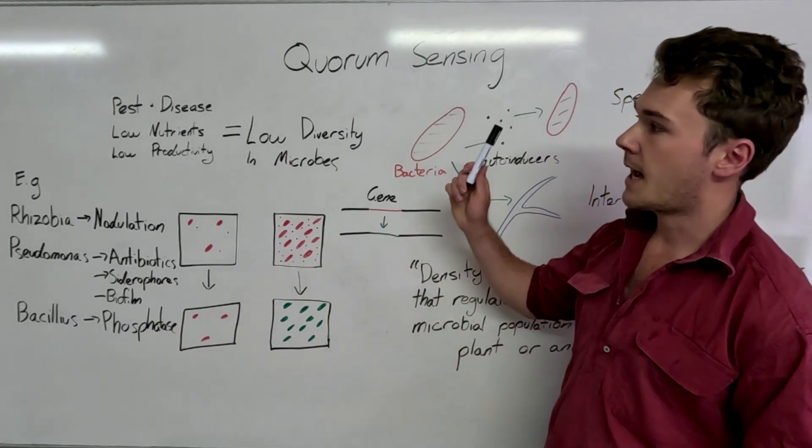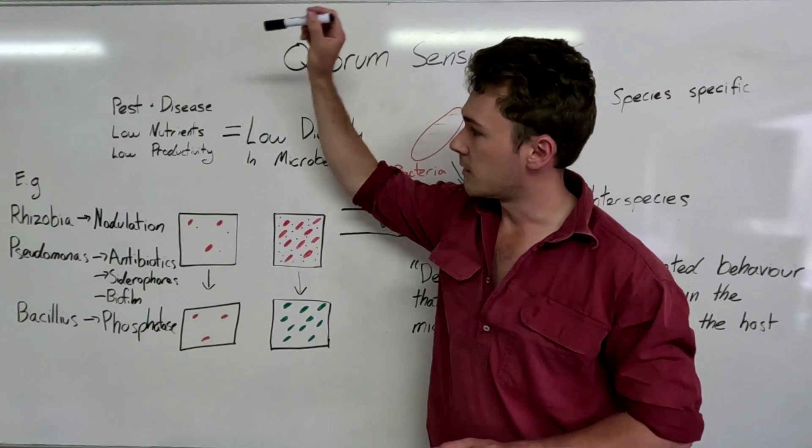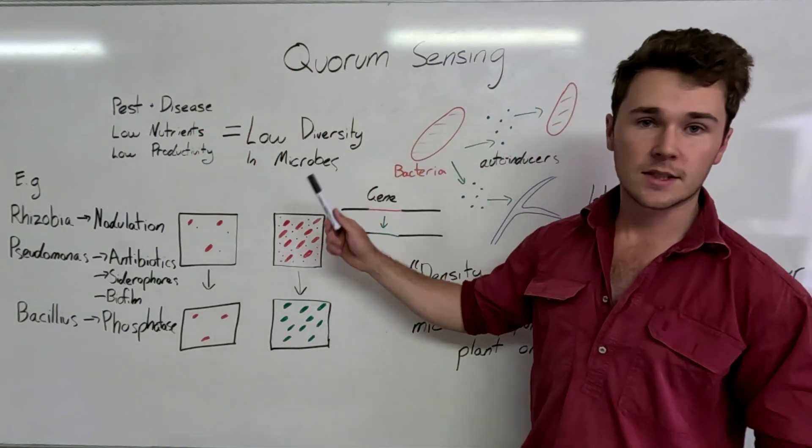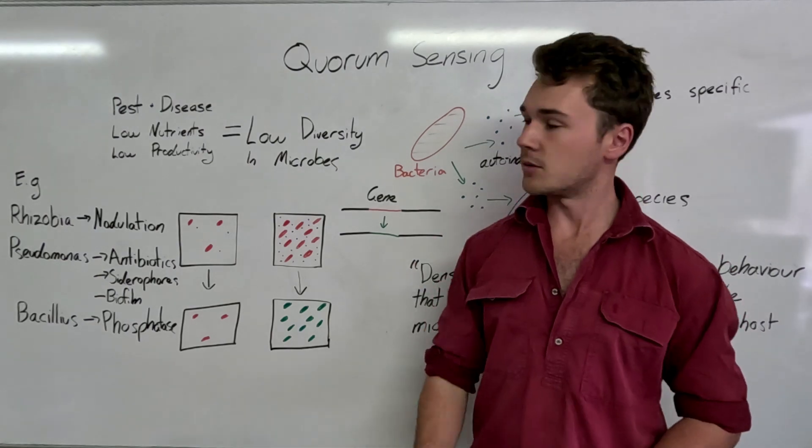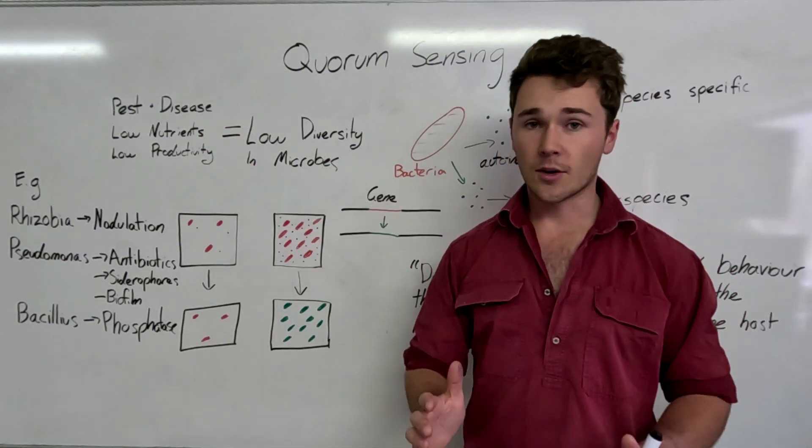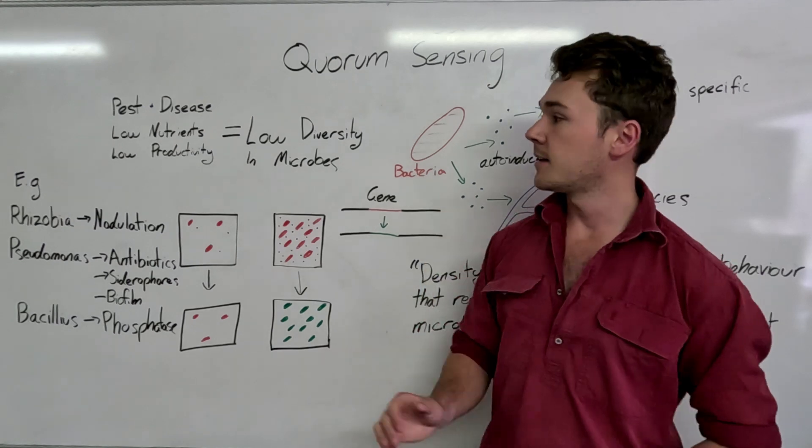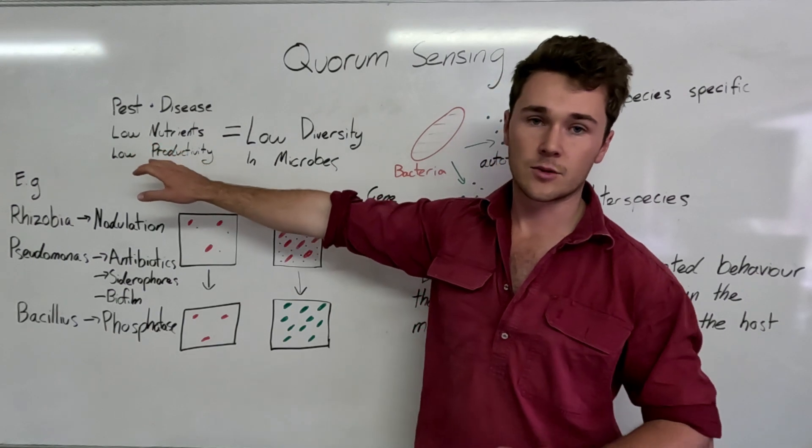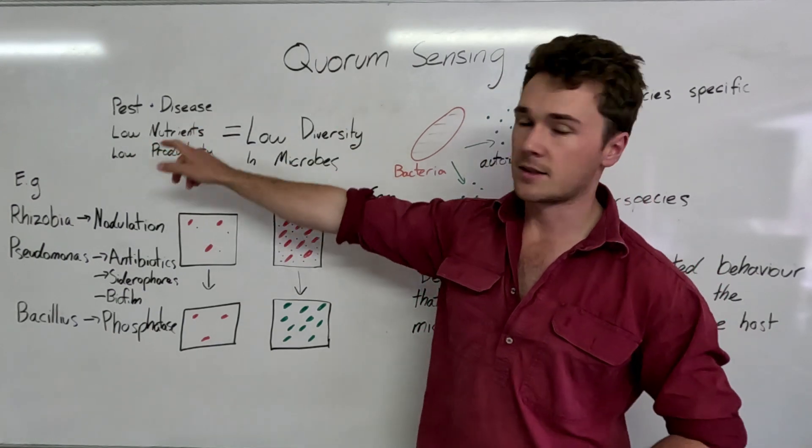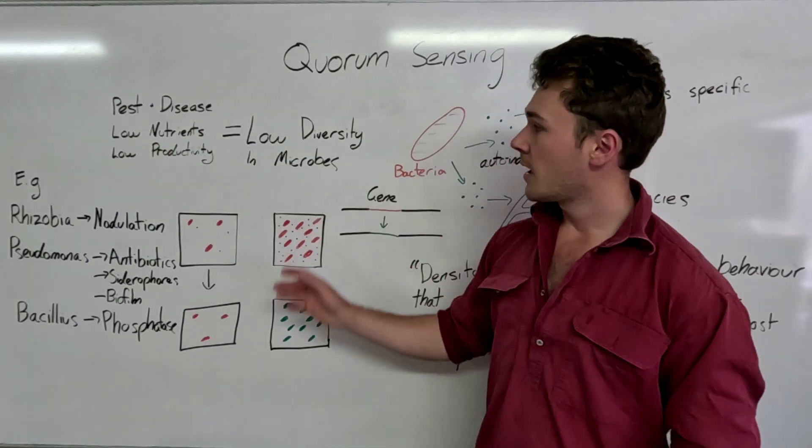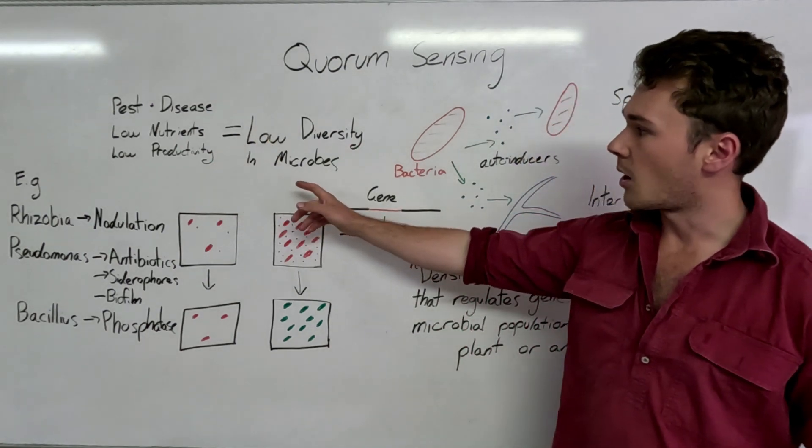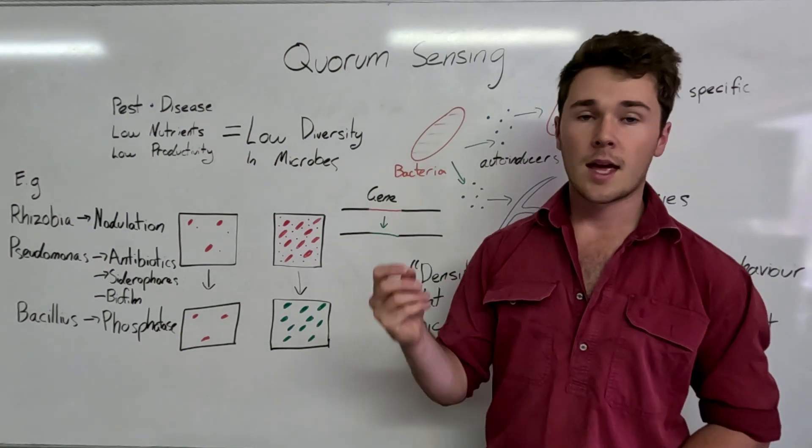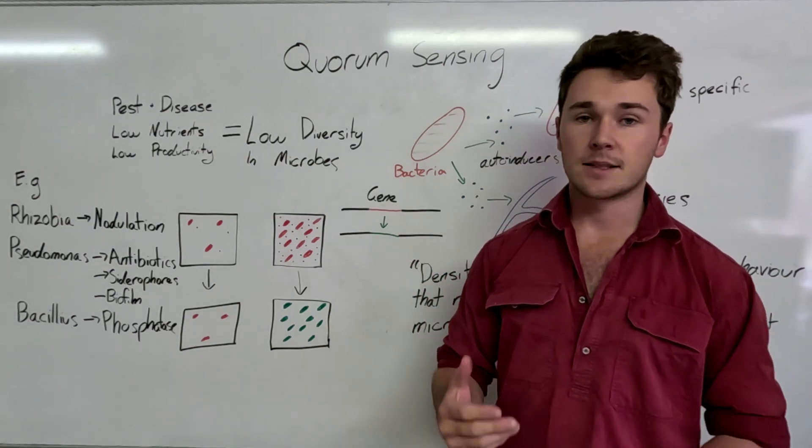So to start off, typically pest and disease, low nutrients and low productivity is a function of low diversity of microbes in our soil. If you're struggling with any of these, we can always go after more production, higher amounts of nutrition in our soil and lower pest and disease pressure. Ultimately that is a function of low diversity in our microbes because microbes contribute so much to plant health and resistance against pest and disease.